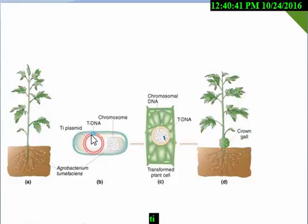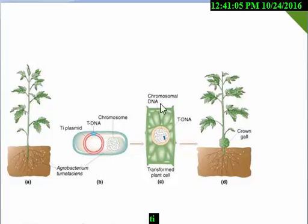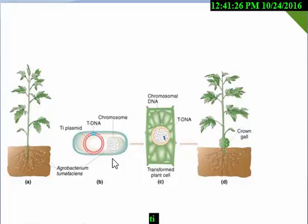In the T-DNA part, that is the main part to cause the tumor or crown gall disease. T-DNA is the main affecting part. T-DNA is 15 to 30 kilobase pairs in size among the strains. When the T-DNA is transferred to the plant cell, it integrates into the chromosomal DNA of the plant chromosome, and then the plant produces crown gall disease. Using this mechanism, we can transfer a particular gene of interest to a new organism.